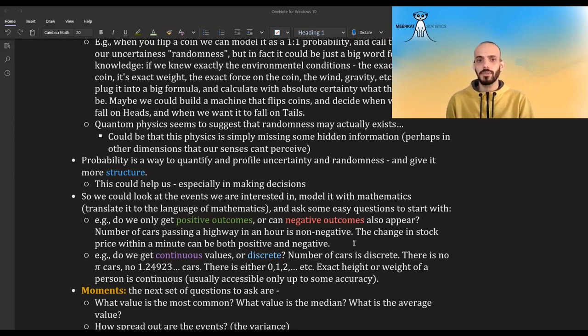So for example, some easy question we can start with is, do the events only get positive outcomes? Or can there also be negative outcomes? So for example, if I measure the number of cars passing in a highway in one hour, this is only non-negative, it can't be that there are minus two cars passing. But if I'm looking at the change in price of a stock within a certain timeframe, this can be both positive and negative. Another thing is, is it continuous or discrete? The number of cars is discrete. There can be no pi cars, no 1.22222 cars. It can either be 0, 1, 2, etc. It's basically countable, countable infinite.